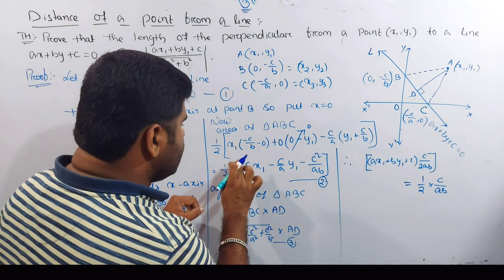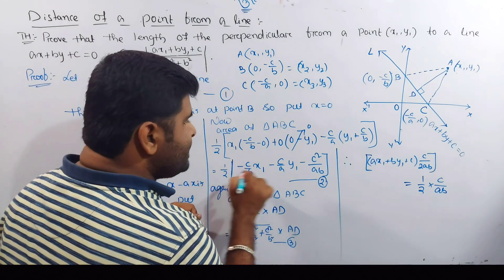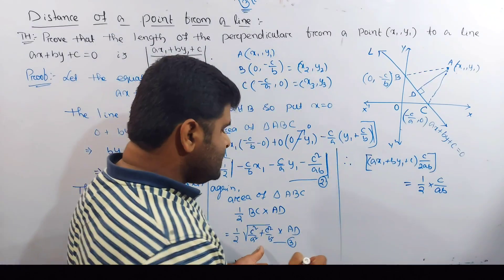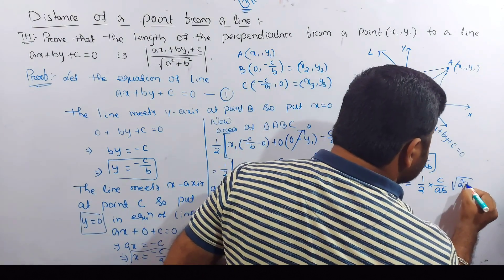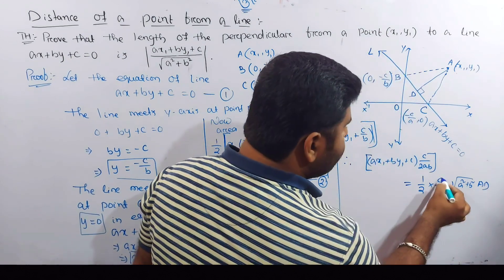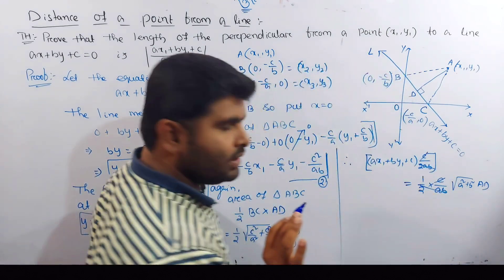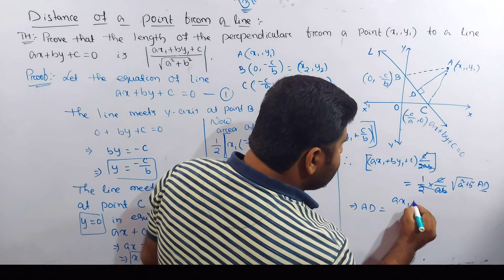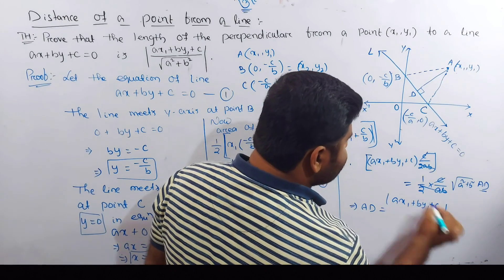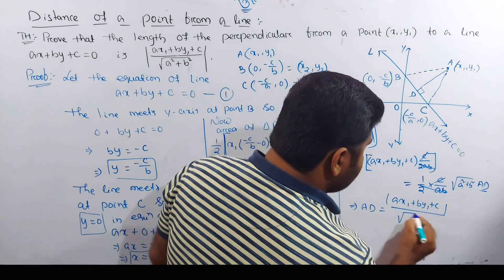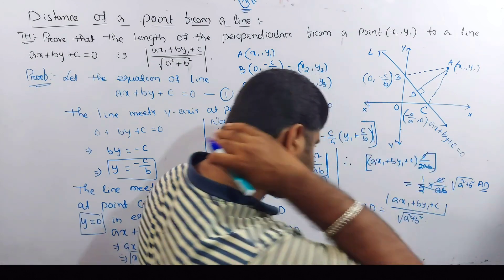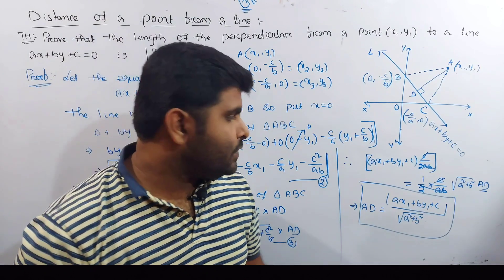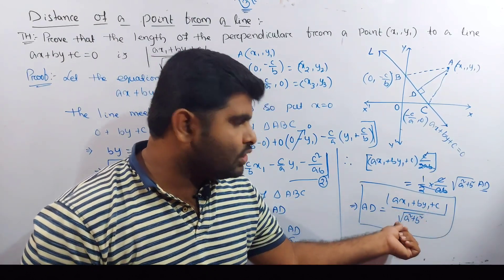Because the value of minus c is actually a modulus here, since we cannot write a negative area. This will be modulus. So equating and cancelling — c cancels, 2ab cancels — we find AD equal to the modulus of ax1 plus by1 plus c, divided by root over of a squared plus b squared. This is the important formula: distance of a point from a line equals |ax1 + by1 + c| divided by √(a² + b²).